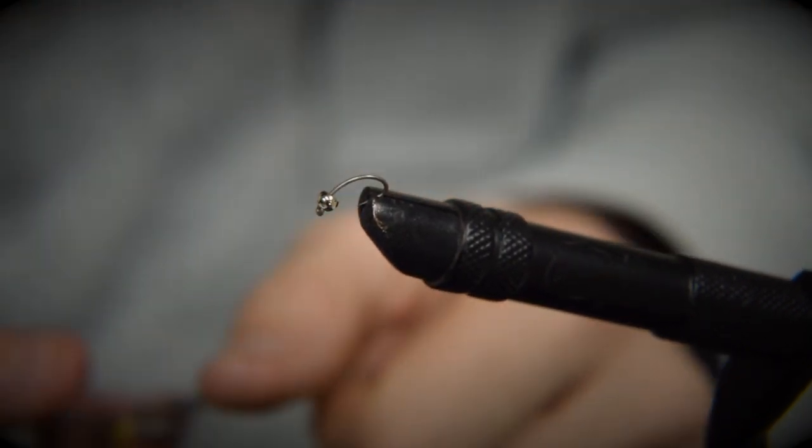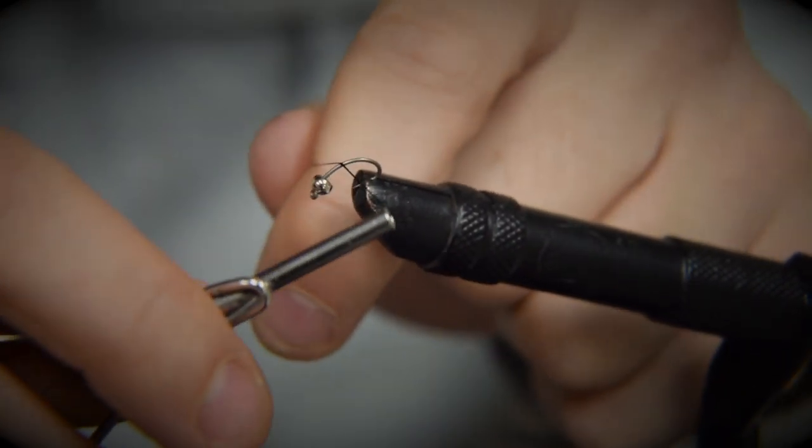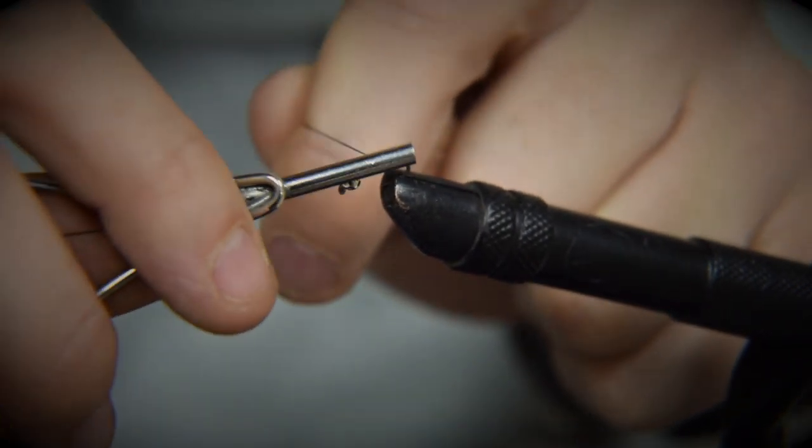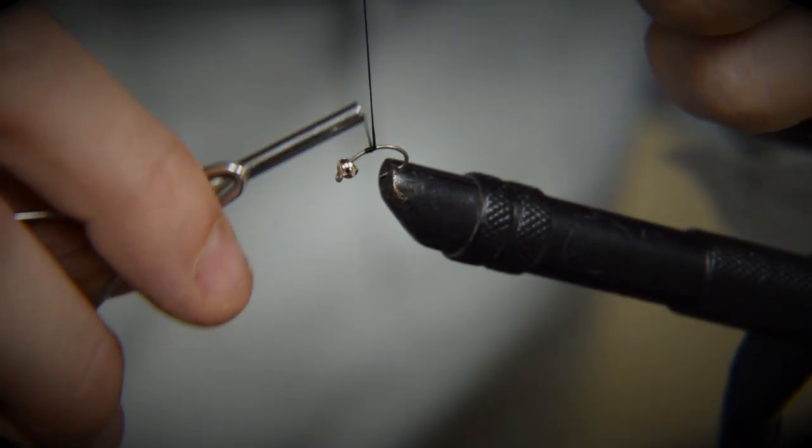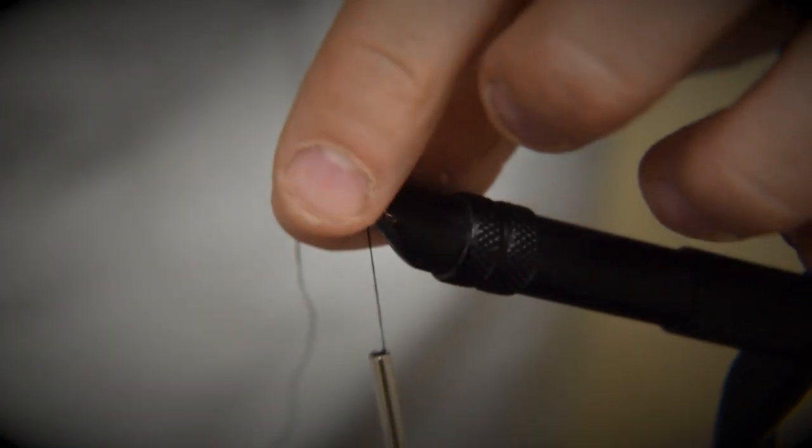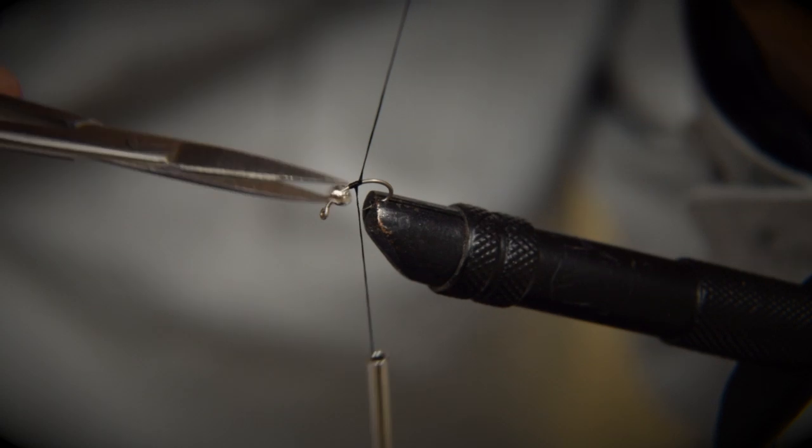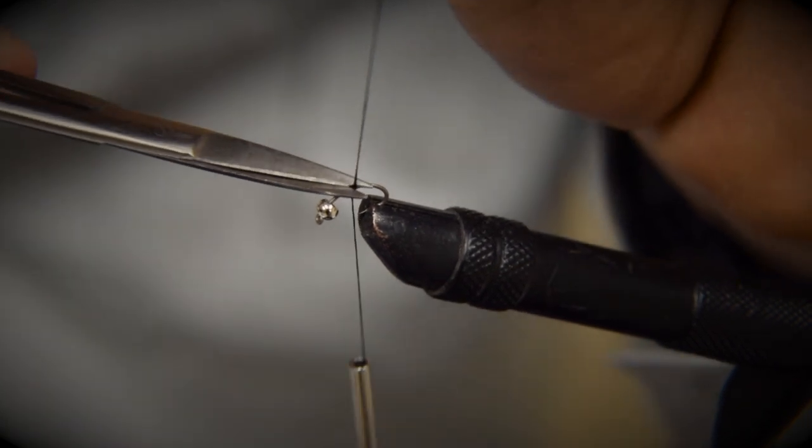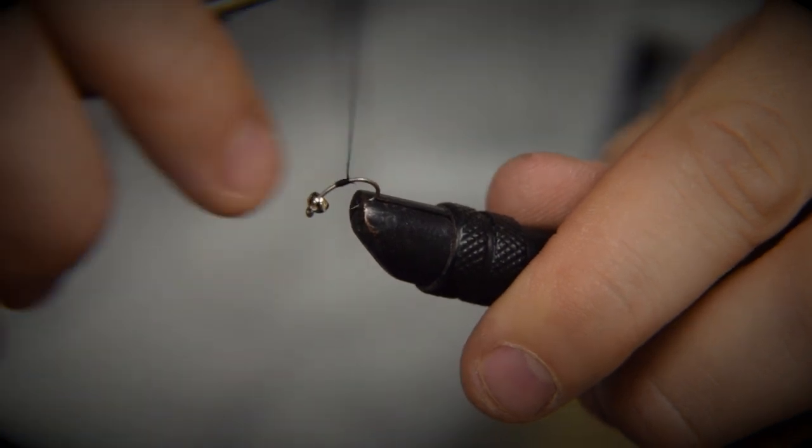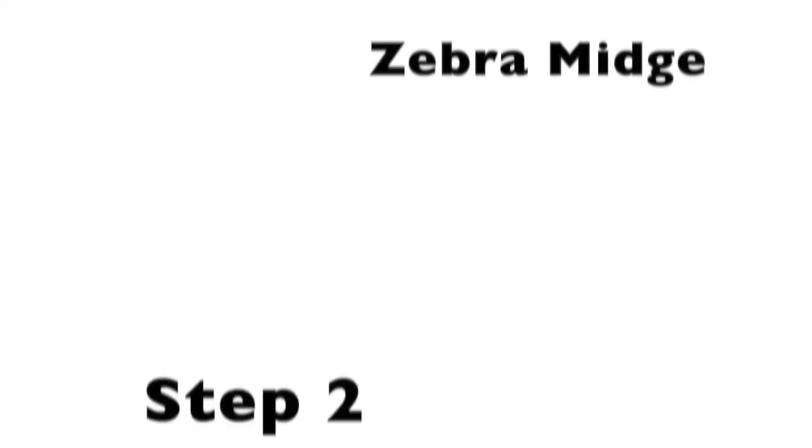Our next step as always is we're going to attach the thread into the middle of the hook. So with the bobbin hand on top, we're going to start that thread, pull it to one side, overlap, and once your thread's ready to hang and not coming undone, go ahead and just give it a snip right off up top so we don't cut our line. All right, there's the first step in our zebra midge.